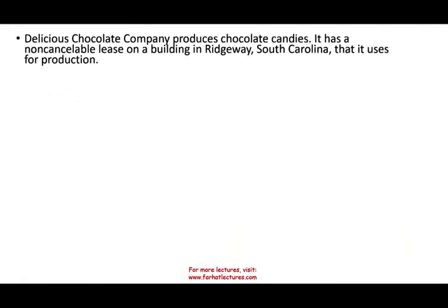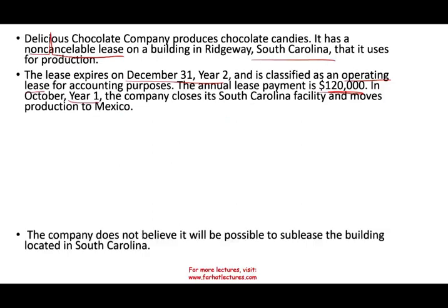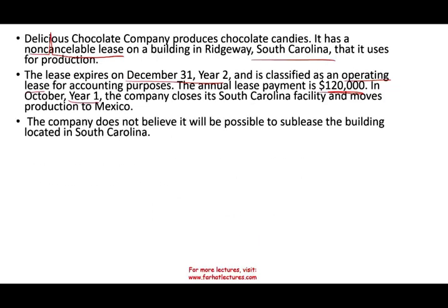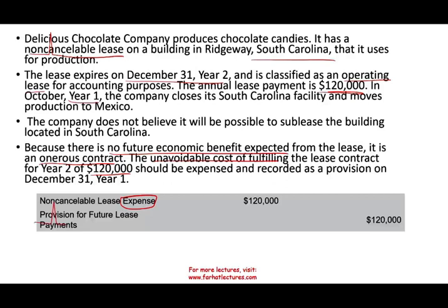Another example: a company that produces chocolate candies has a non-cancelable lease on a building in South Carolina. The lease expires December 31st year two — it's a two-year operating lease with an annual lease of $120,000. In October of year one, the company closes the South Carolina facility and moves to Mexico. The company believes they cannot sublease the building, so they're stuck with the lease. Because there's no future economic benefit expected, the lease becomes an onerous contract. There is an unavoidable cost of $120,000 for year two, so they must book the expense in year one — debit an expense and credit a liability.